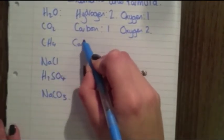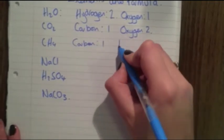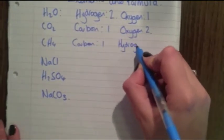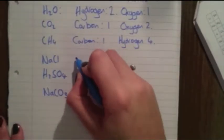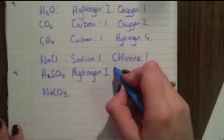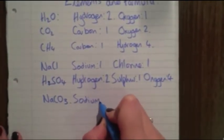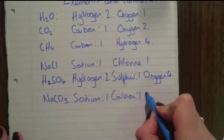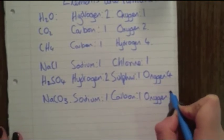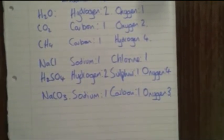For methane, CH4, we can see there is one carbon and there are four hydrogens, because there is a little four after the hydrogen. For sodium chloride, NaCl, we can use the periodic table to identify the names: sodium and chlorine. We carry on the same method to identify H2SO4. Sodium carbonate contains three different elements: sodium, carbon — one of each — and oxygen, of which we have three, because there is a small number after the oxygen.